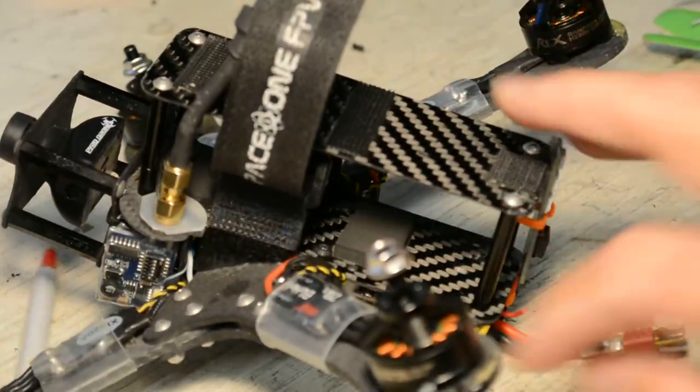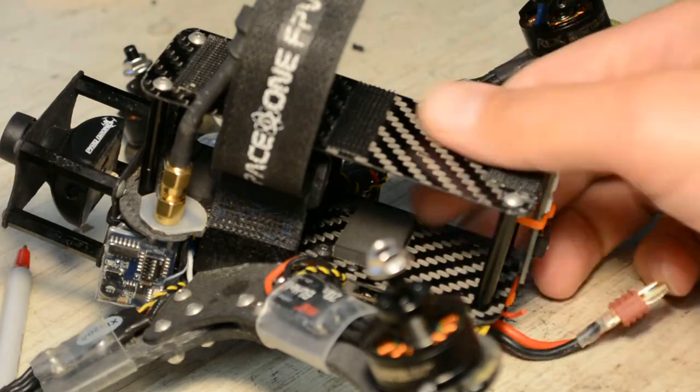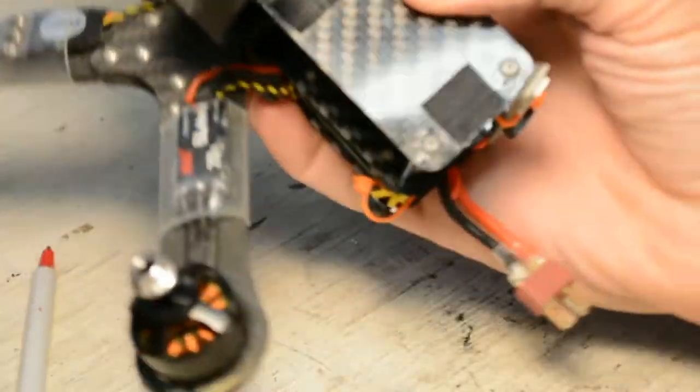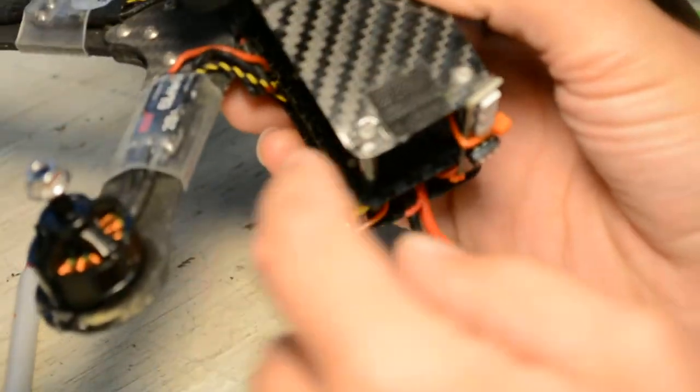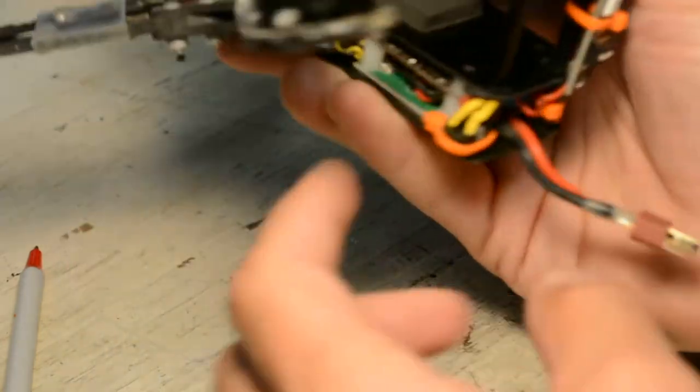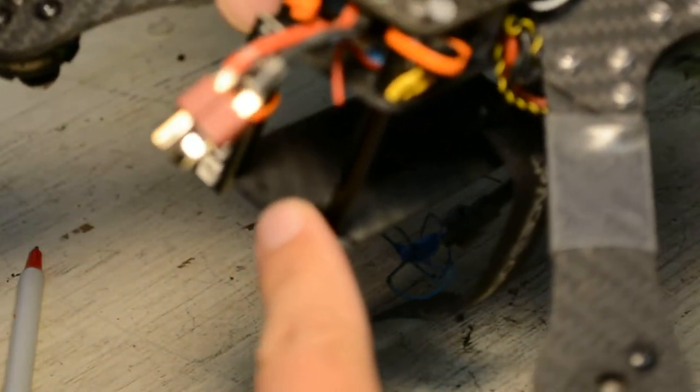I use the regular battery pads. This thing has taken some crashes, a lot of hard crashes. My last crash over the weekend broke the top plate. Not a big deal. I ended up just securing it under here. I have plenty of carbon fiber.